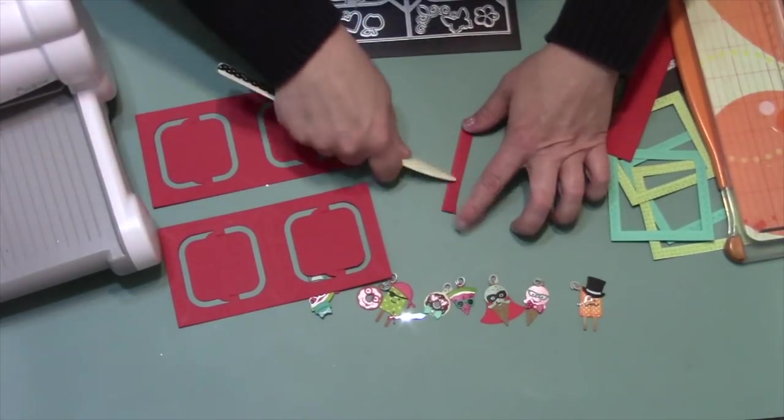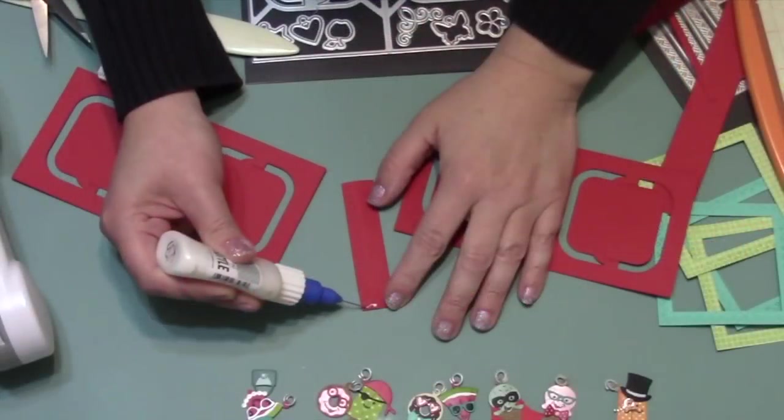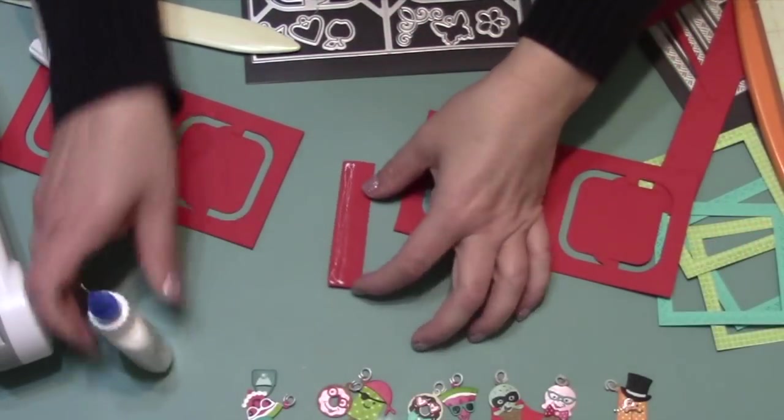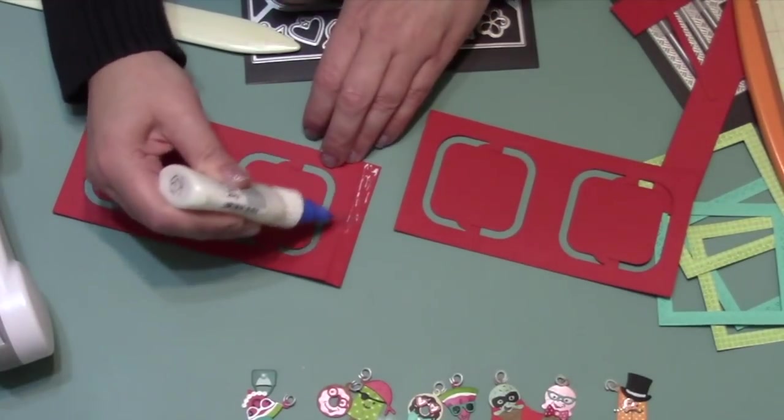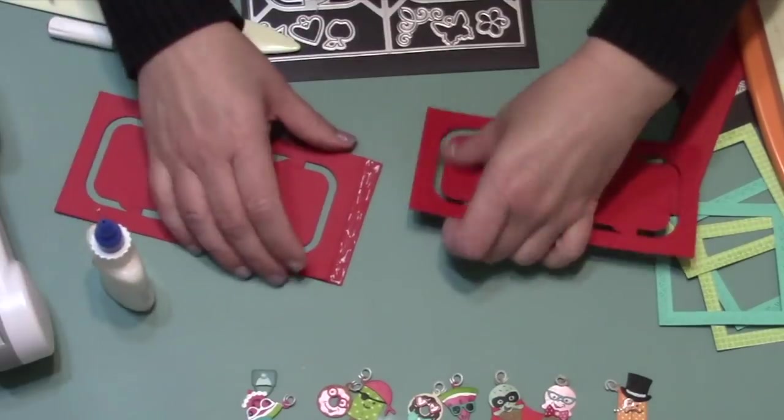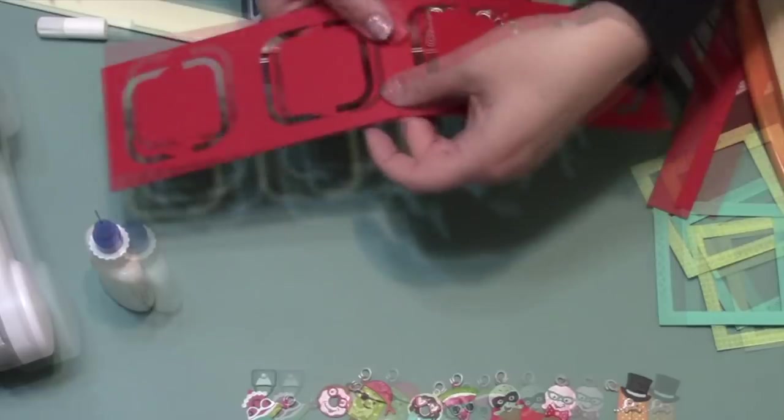After folding that in half up the middle mountain style, then I just use a strong adhesive to attach that to each of my page sets as a hidden hinge. That center fold will be a mountain in the finished card.